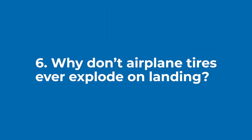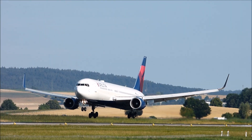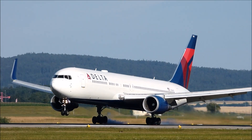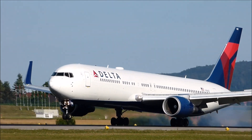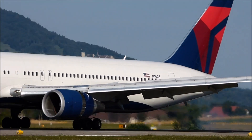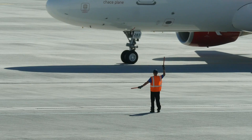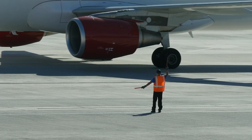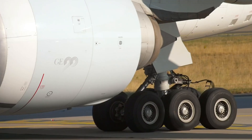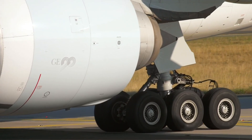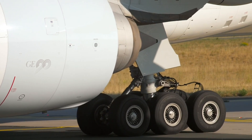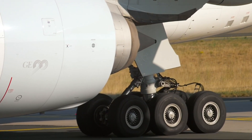Why don't airplane tires ever explode on landing? One thing you almost never see when an airplane lands is a blowout. That's because a typical commercial aircraft tire can handle loads upwards of 38 tons. The key to their durability is in maximizing air pressure. Commercial aircraft tires are typically inflated to over 200 psi — that's roughly six times the amount that goes into your car's tires.